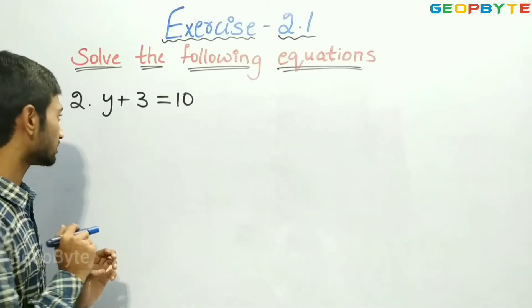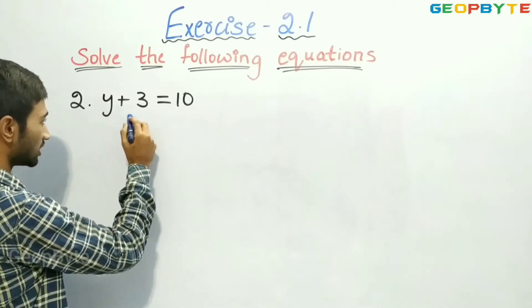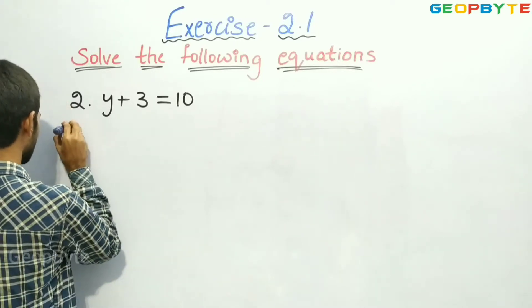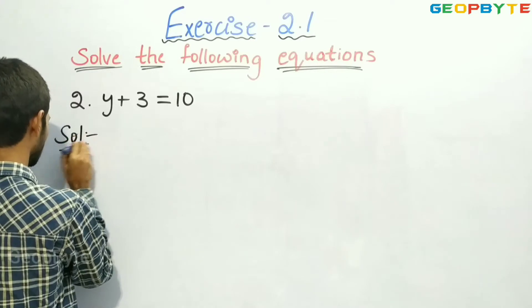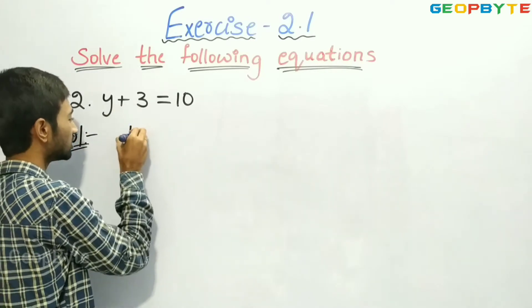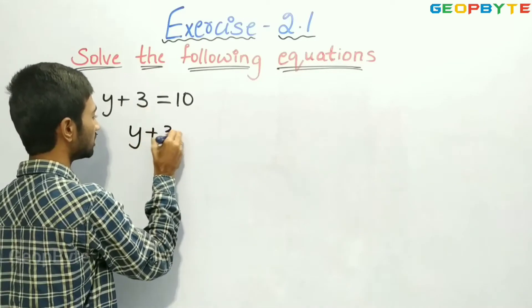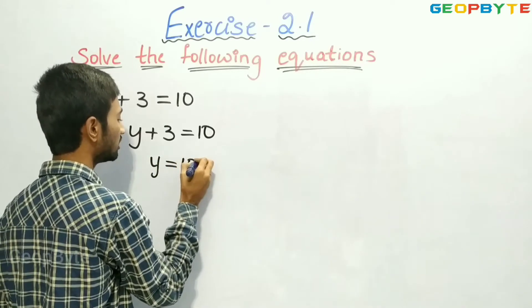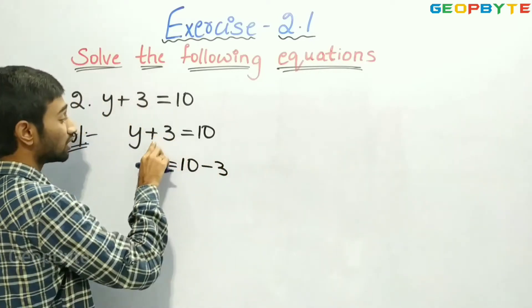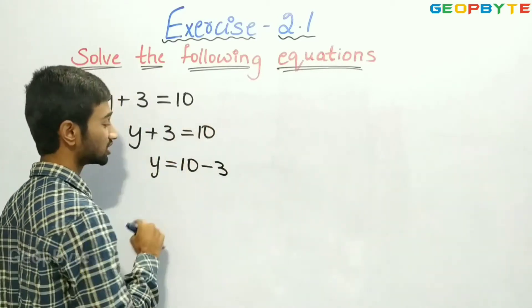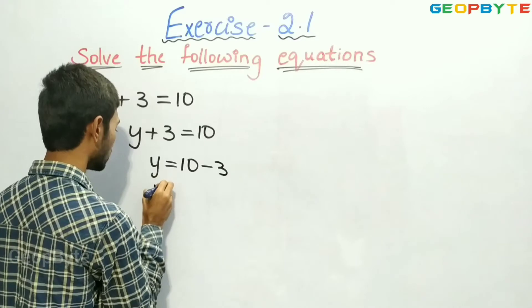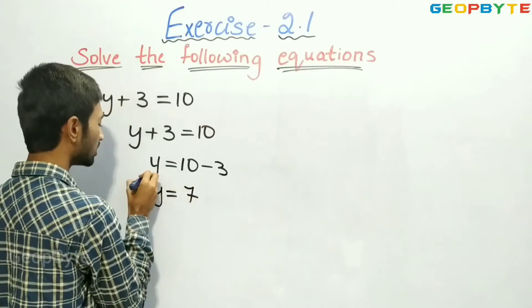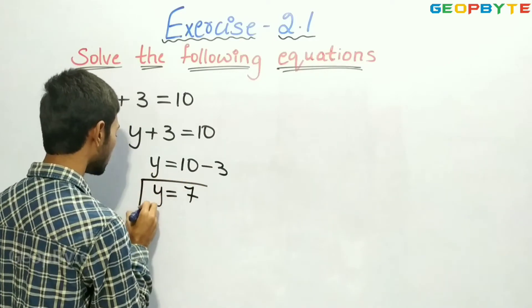Now let us see the second question: y plus 3 is equal to 10. Let us find the value of y. The given equation is y plus 3 is equal to 10. So, y is equal to 10 minus 3. Here, we are transposing plus 3 to the RHS, so it became minus 3. Therefore, y is equal to 10 minus 3, which is 7.